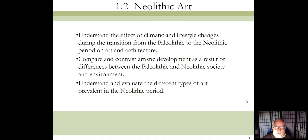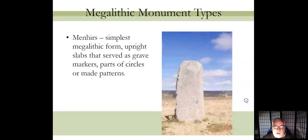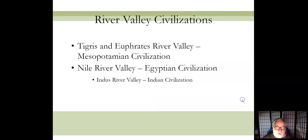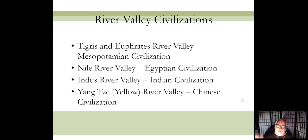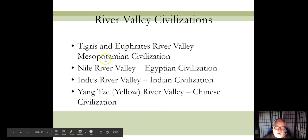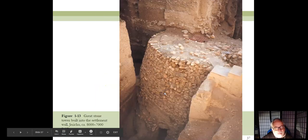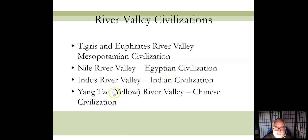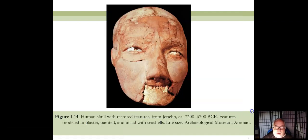You will need to know the three kinds of megaliths. The Neolithic agricultural revolution happened in four different river valley civilizations: the Tigris and Euphrates, the Nile, the Indus, and the Yangtze. Mesopotamia is in Iraq, the Nile is in Egypt, the Indus River is in India, and the Yangtze is in China.